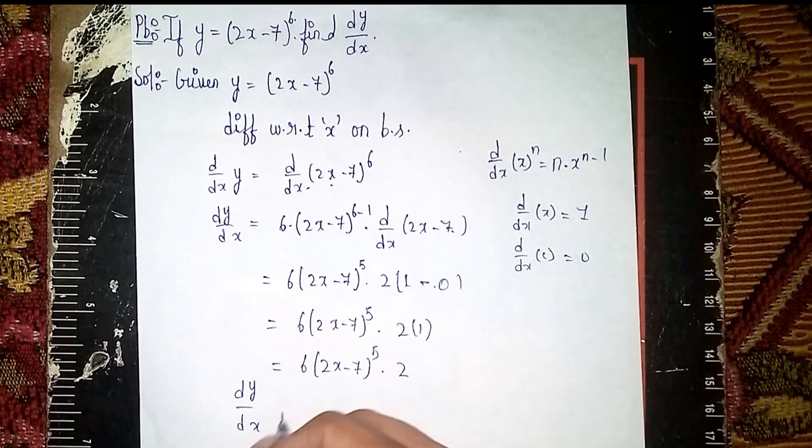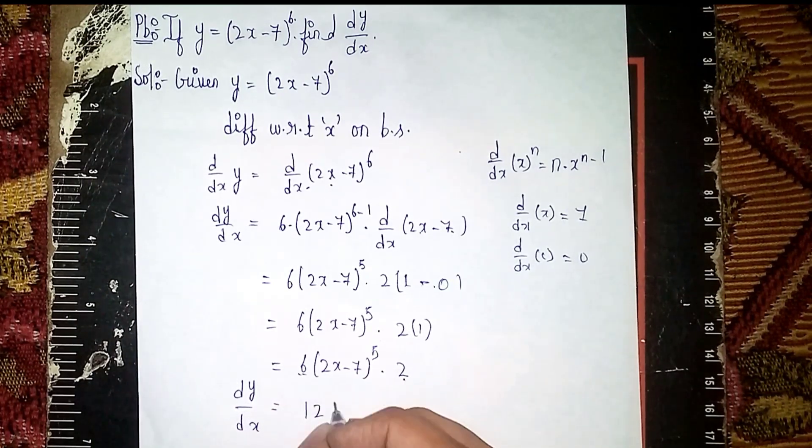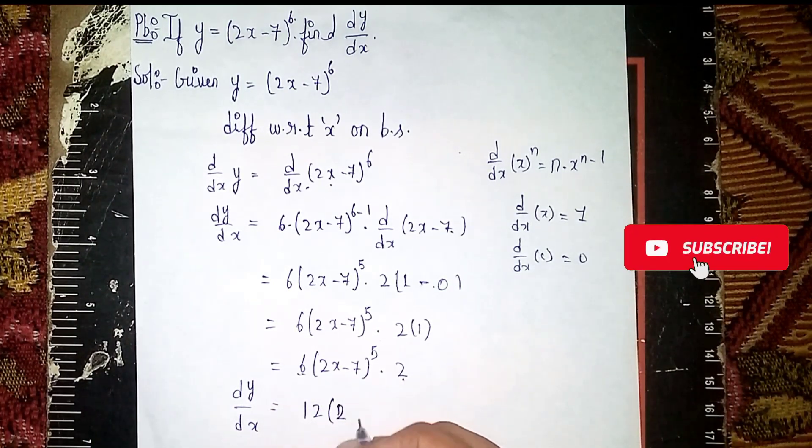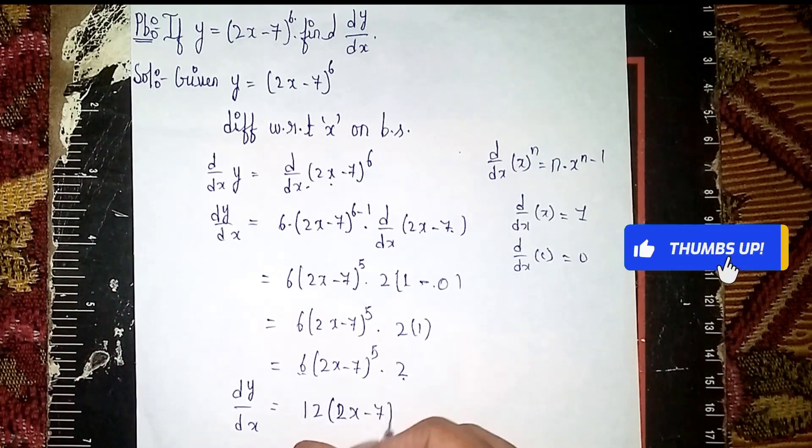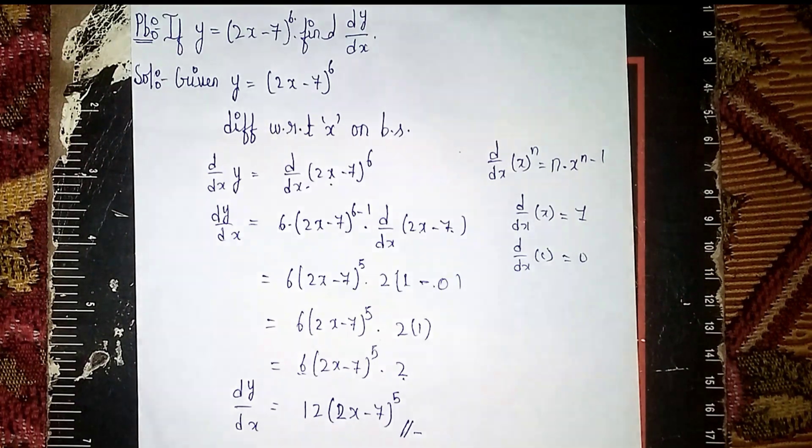Our answer is dy/dx is equal to - now 6·2 is 12 - so 12·(2x - 7)^5. This is our solution, this is our answer. Thanks for watching.